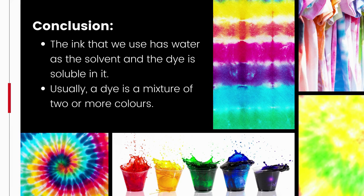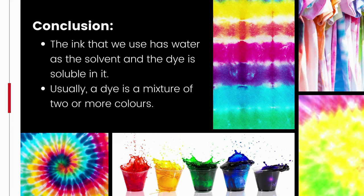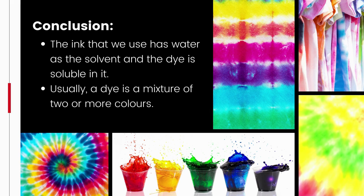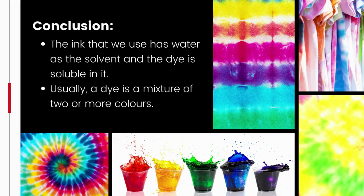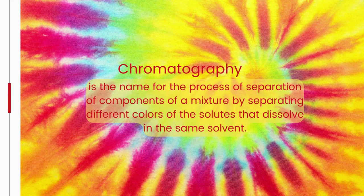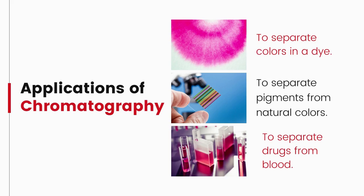The ink we use has water as the solvent and the dye is soluble in it. As water rises on the filter paper, it carries the dye particles along. A dye is usually a mixture of two or more colors — the more soluble colored component rises faster, and in this way colors get separated. This technique is called chromatography, used for separation of solutes that dissolve in the same solvent. 'Chroma' is a Greek word meaning color — this technique was first used for separation of colors, hence the name. Applications: separating colors in a dye, separating pigments from natural colors, and separating drugs from blood.